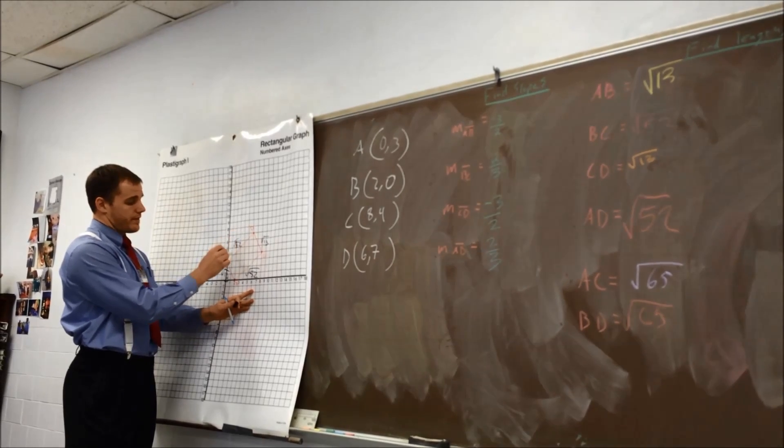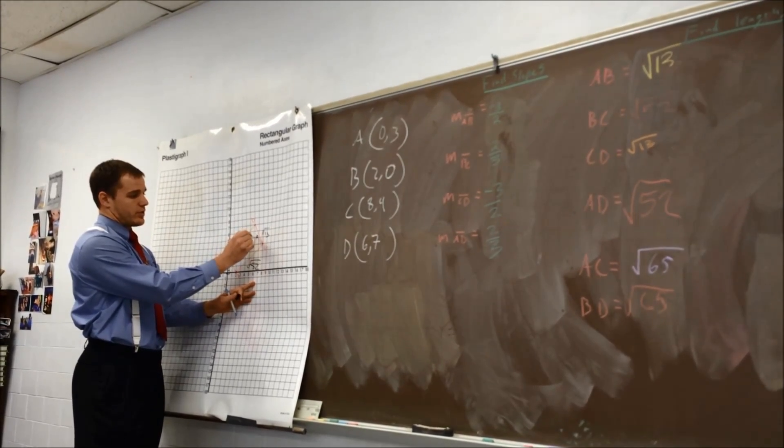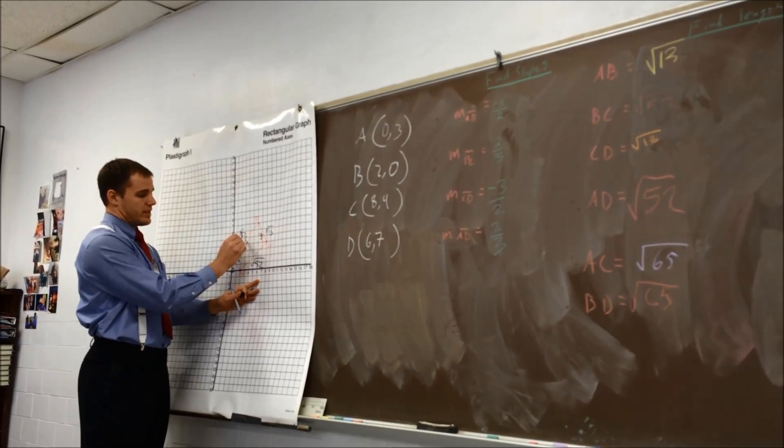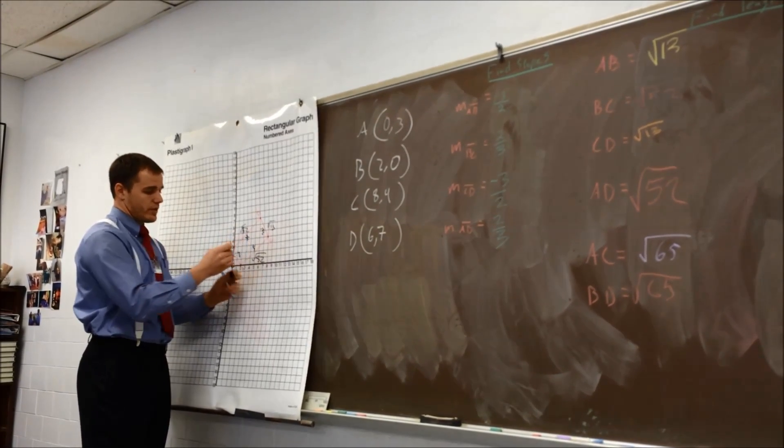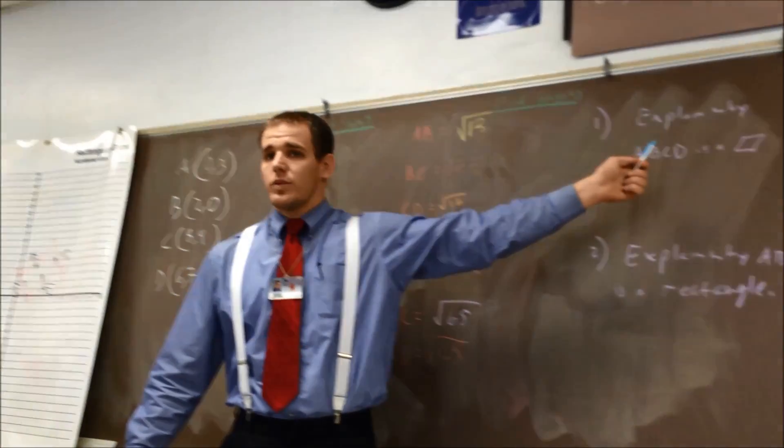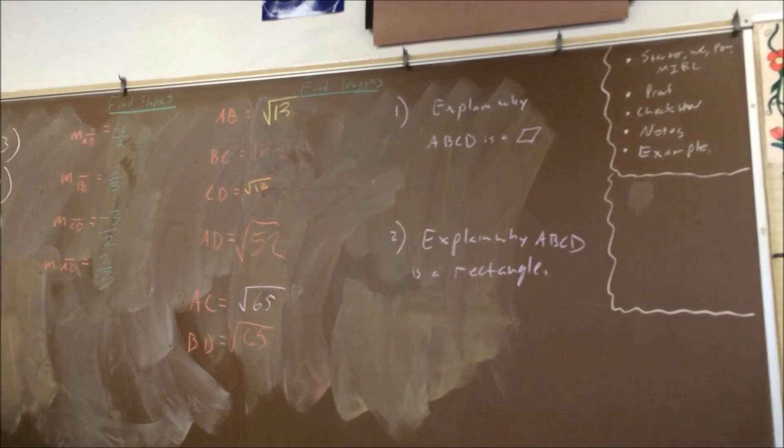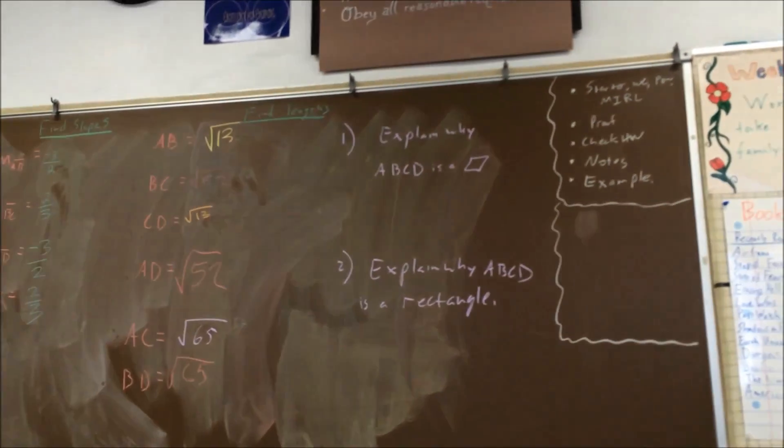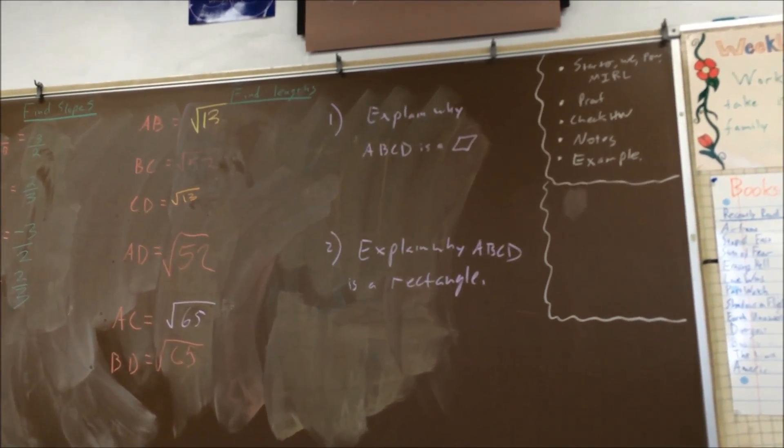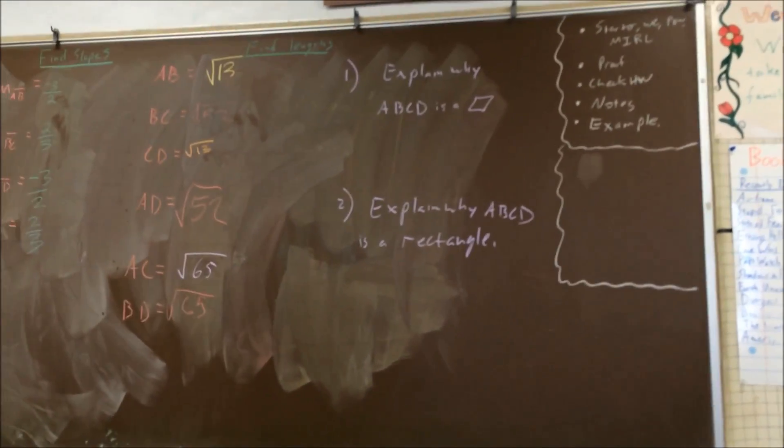We know the slope of this one is negative 3 over 2, same thing for this one, slope of this is 2 thirds, slope of this is 2 thirds. With your teammates I want you to take 30 seconds, just 30 seconds, explain why does this have to be a parallelogram, use either the slopes or the lengths. 30 seconds, discuss with your teammates, go.